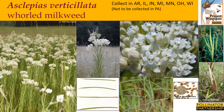Asclepias verticillata, or whorled milkweed, can be found in prairies and in forest openings. It grows from a single stem from one to three feet tall. It's easily distinguished by its leaves, which are very narrow — approximately an eighth of an inch wide and linear in shape — arranged in whorls around the stem. Small, greenish-white flowers occur in rounded clusters of one to three inches across, appearing only on the upper part of the stem. The seed pods are thin and three to four inches long, and can be collected in mid to late September and early October.